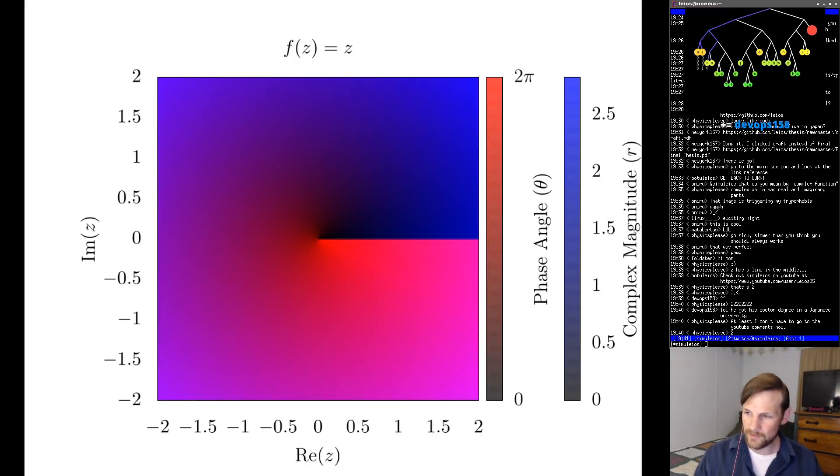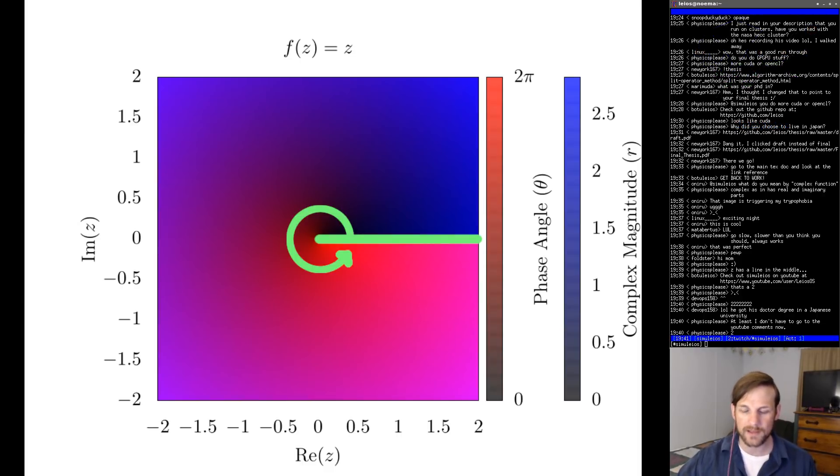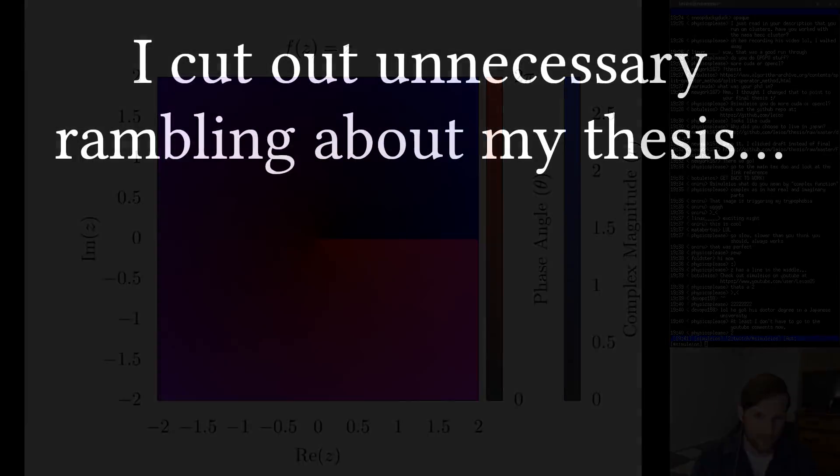Now the first thing you're going to notice is there's this very big phase discontinuity along the x-axis. You can see that the phase angle changes in red and we have this 0 to 2π phase winding. Also blue increases as we go further out because the magnitude increases as we go further out. Now I do want to point out this phase discontinuity because I used it a lot in my thesis and it's really cool.